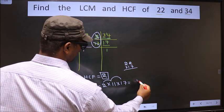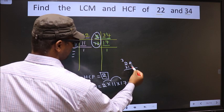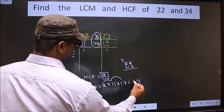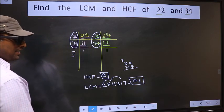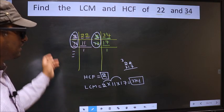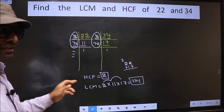17 into 2, 34, so 4, 3, 17 into 2, 34 plus 3, 37, so 374 is our LCM. Am I clear?